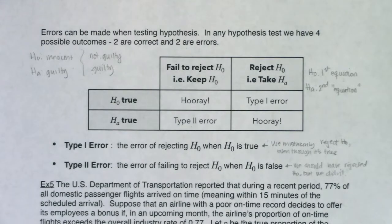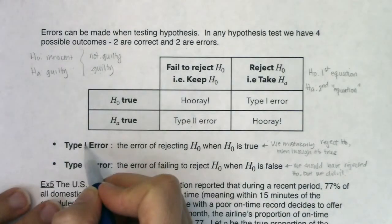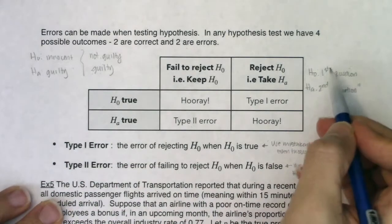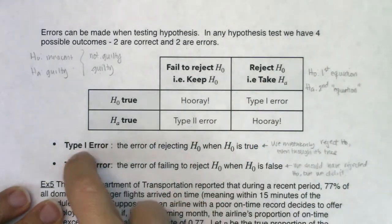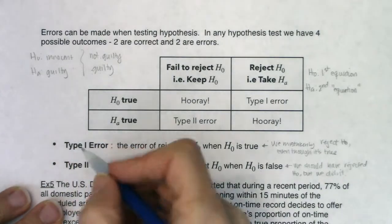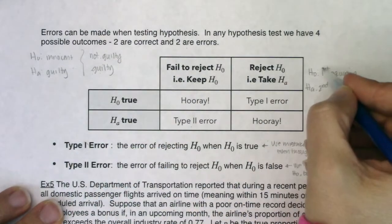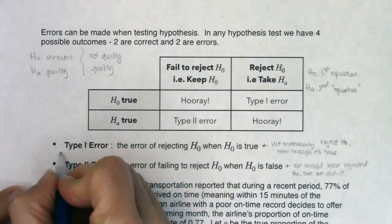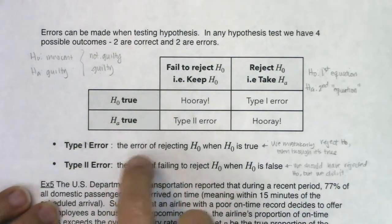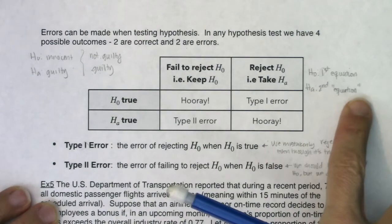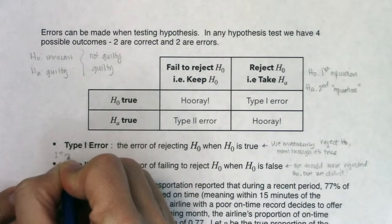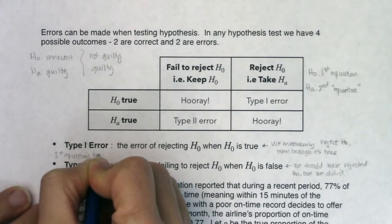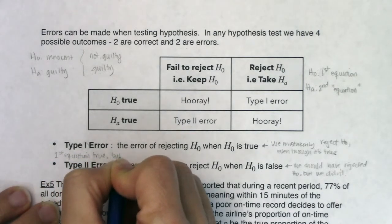Here's what helped me figure out which errors were which. In a Type 1 error, the type number told me which equation was true. Type 1 error means the first equation was true — H naught was true — but I made an error, so I mistakenly chose the second one. I mistakenly chose H_A: first equation true, but I mistakenly chose second.